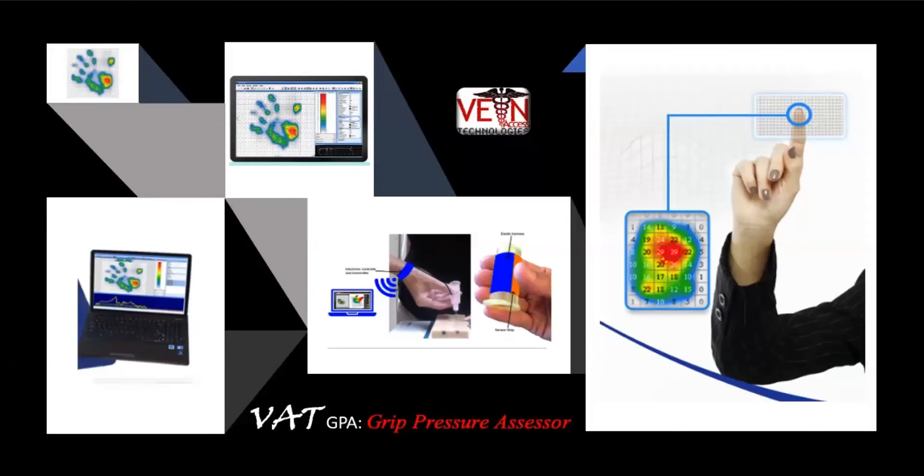This new tool is called the Grip Pressure Assessor. It's going to tell us about how much pressure is being applied to that needle system upon needle insertion, and we can really improve any needle insertion by determining this information.